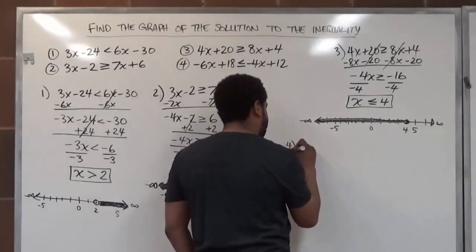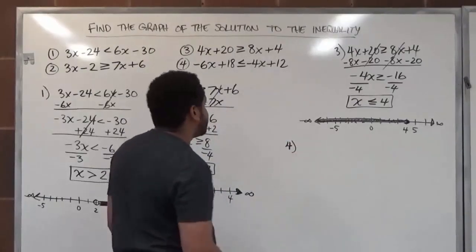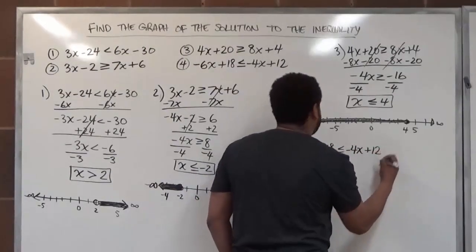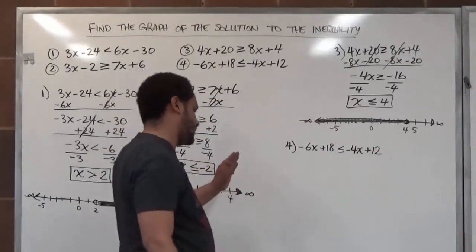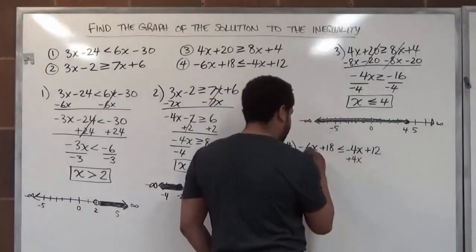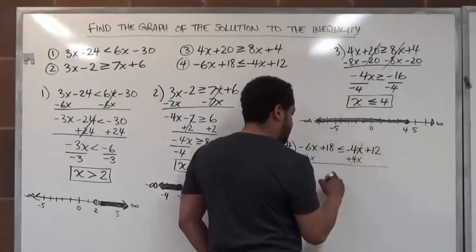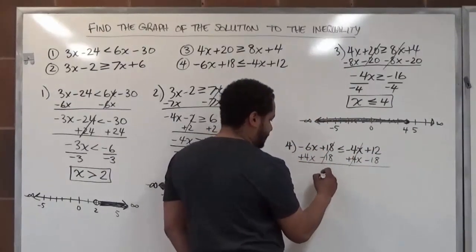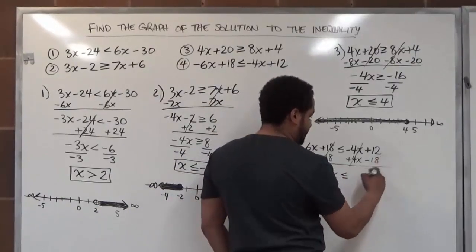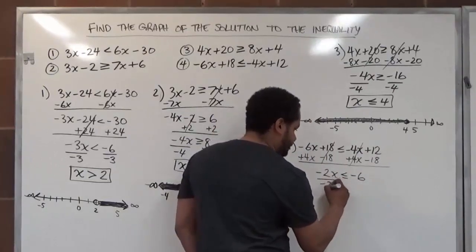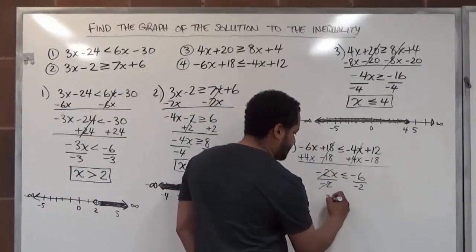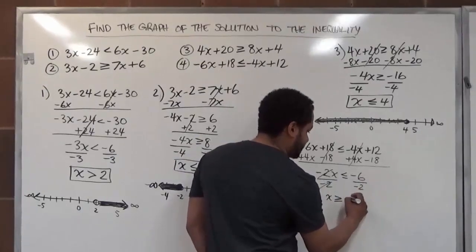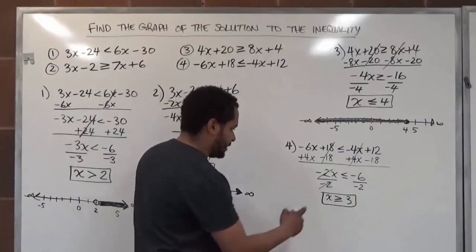Now let's go on to number four: negative 6x plus 18 is less than or equal to negative 4x plus 12. We move the x's to the left and the constants to the right. Adding 4x to both sides — these cancel — and subtracting 18 from both sides. So negative 6x plus 4x is negative 2x, less than or equal to 12 minus 18, which is negative 6. Dividing by negative 2 changes the direction of the arrow to the right, and negative 6 divided by negative 2 gives positive 3.